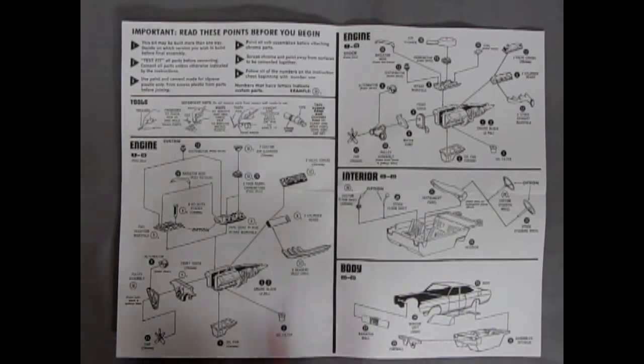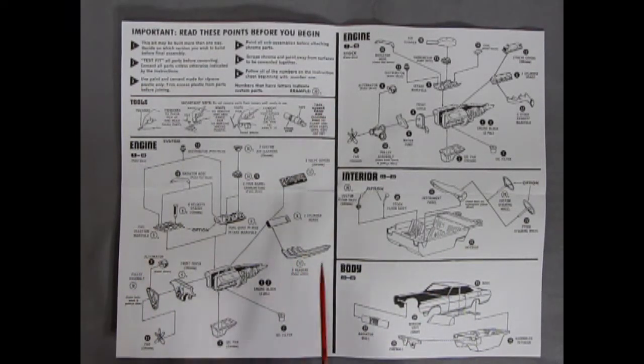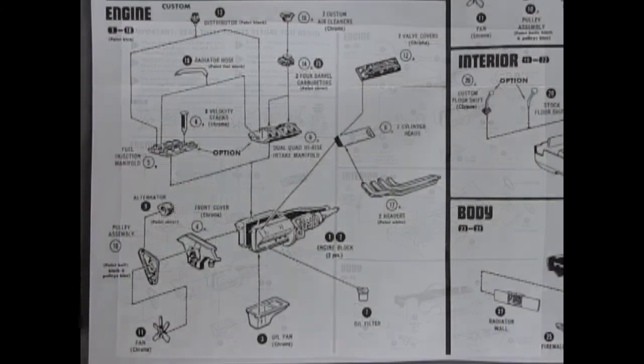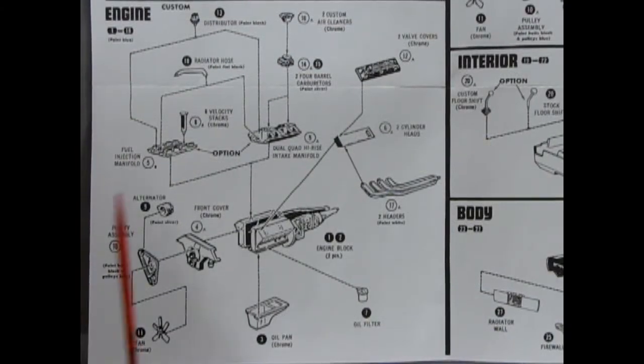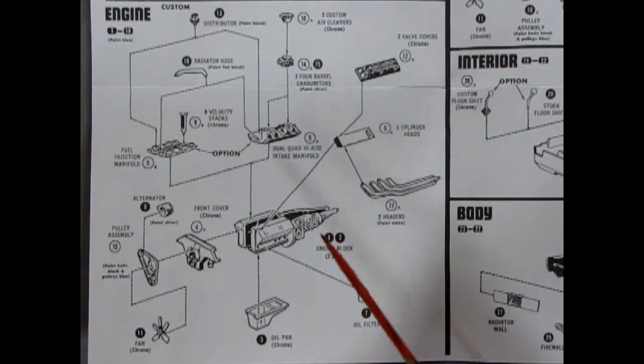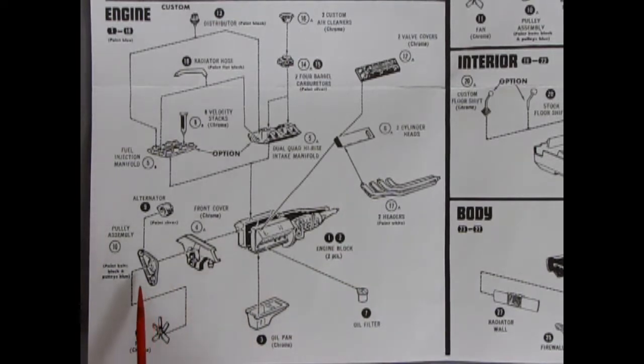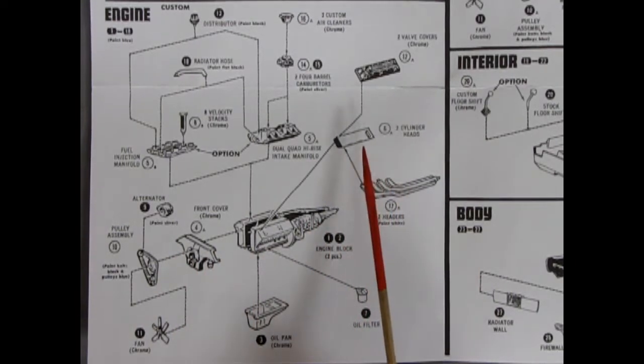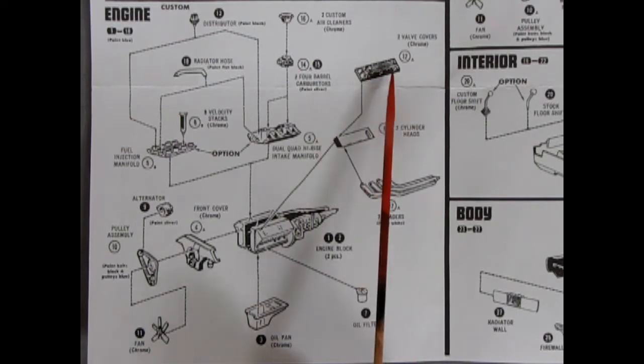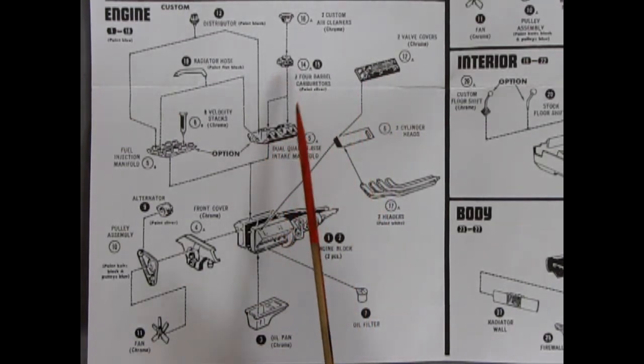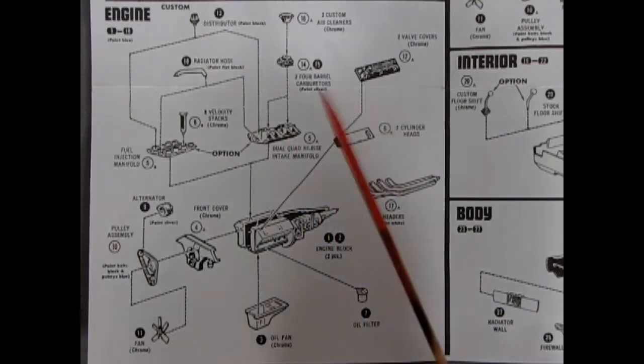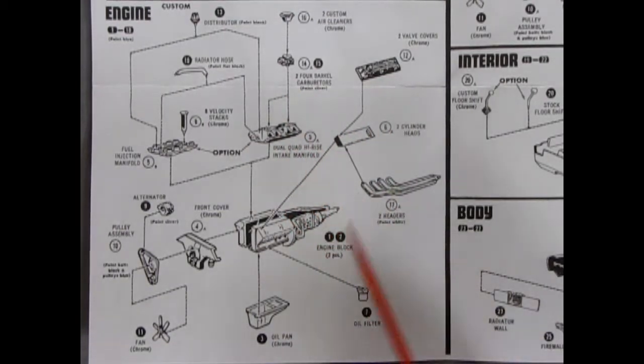So instead of looking at this as one big monster, I'm just going to zoom in here a little bit and we'll see how it all goes. And here we have our engine block for the custom one, which is going together. So we've got a right and left hand engine block, and then we have the big front cover, as well as the pulleys. This looks like it's for the single overhead cam type Ford engine, which we've seen in some of these other reviews.